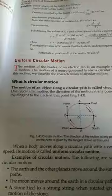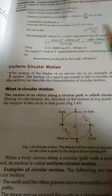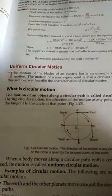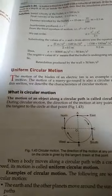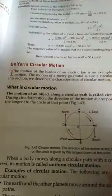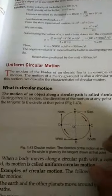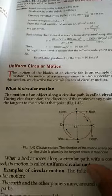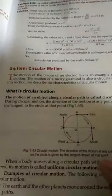Circular motion means if an object is moving on a circular path, then the motion of the object is known as circular motion.